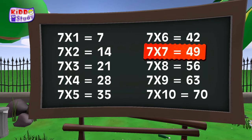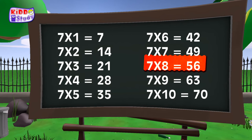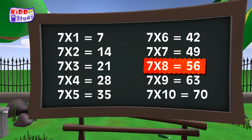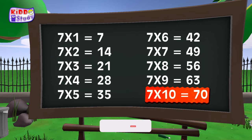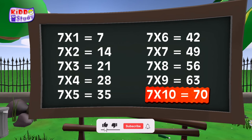7 sevens are 49. 7 eights are 56. 7 nines are 63. 7 tens are 70.